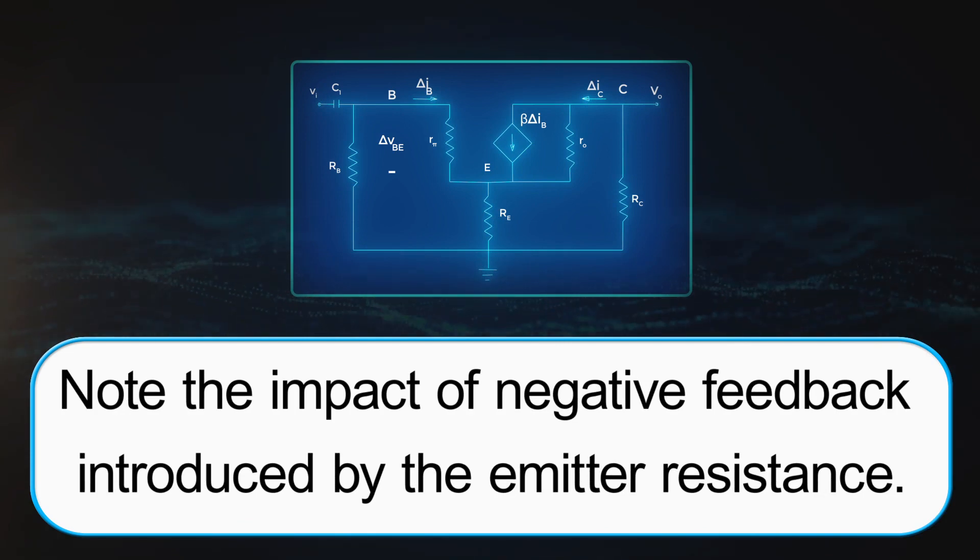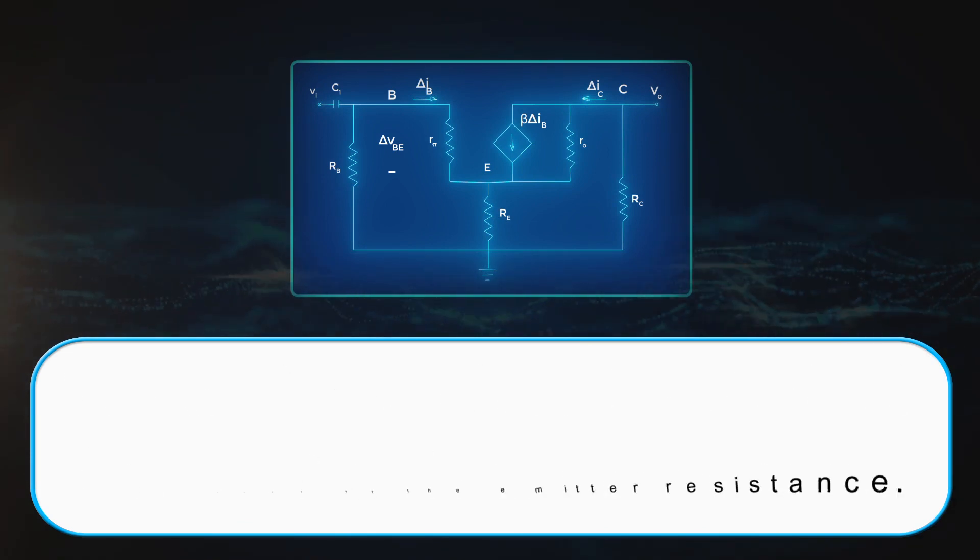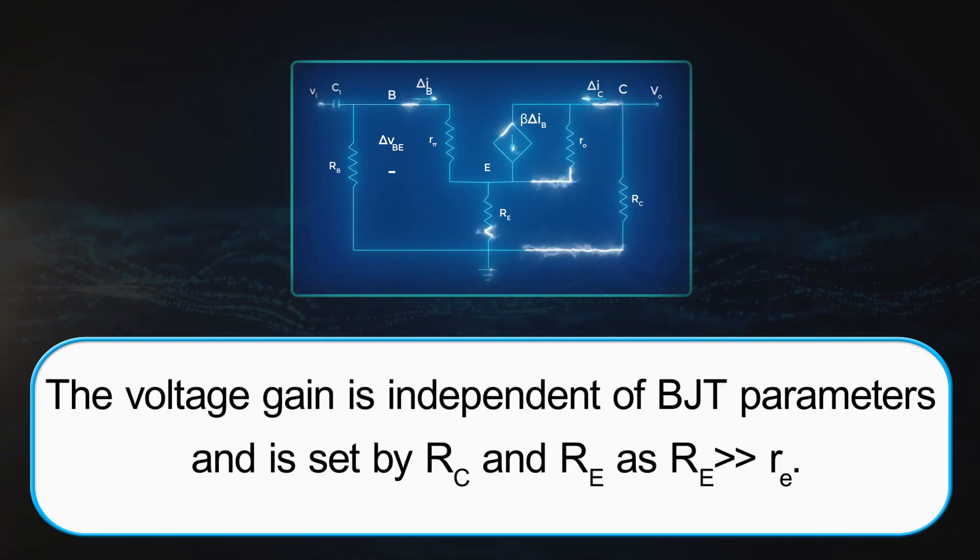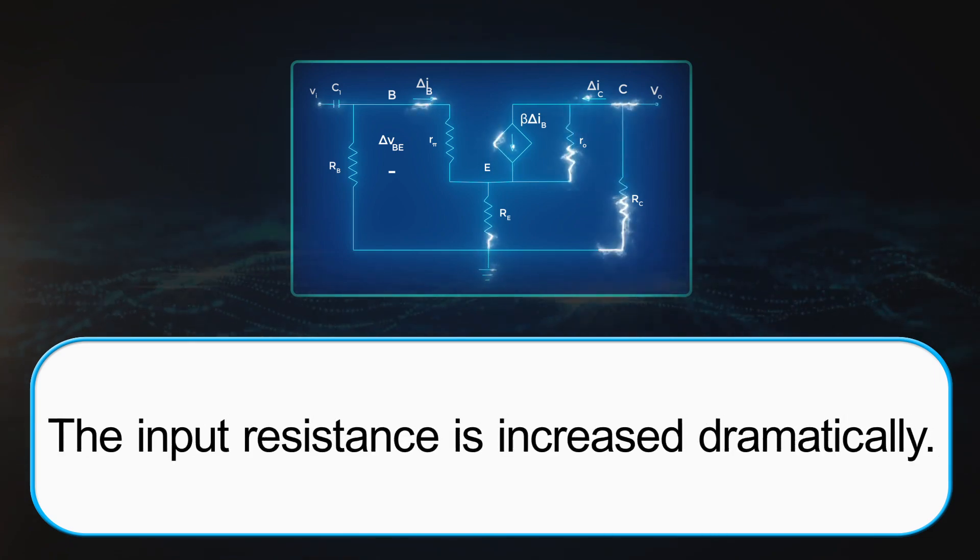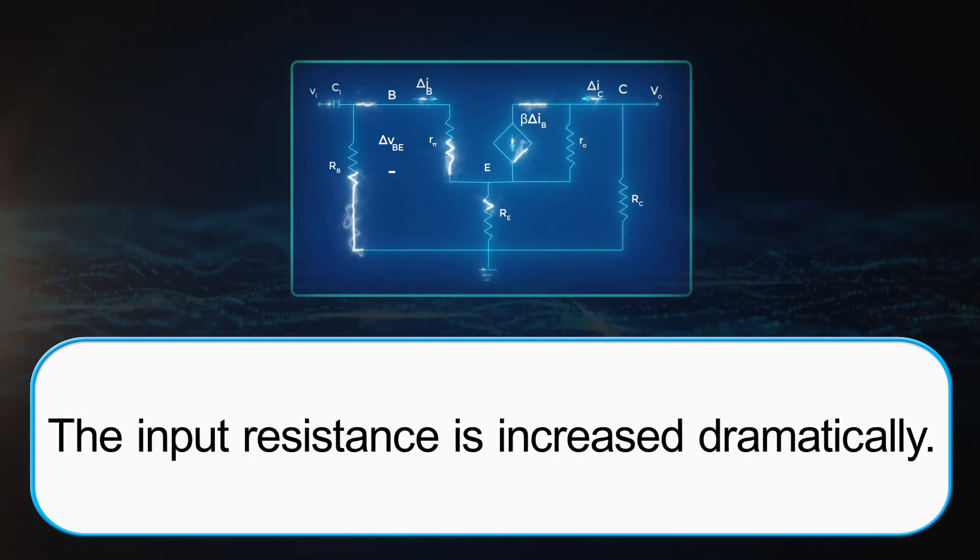Note the impact of negative feedback introduced by the emitter resistance. The voltage gain is independent of BJT parameters and is set by RC and RE. The input resistance is increased dramatically.